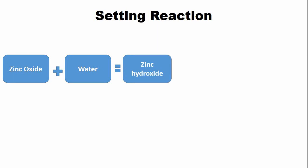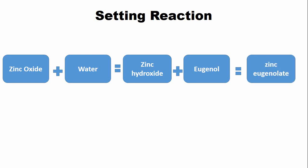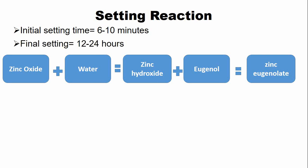The zinc hydroxide then reacts with the eugenol to form zinc eugenolate, which is the final set form of the zinc oxide eugenol cement. The initial setting occurs within 6 to 10 minutes; however, the final setting may take about 12 to 24 hours.